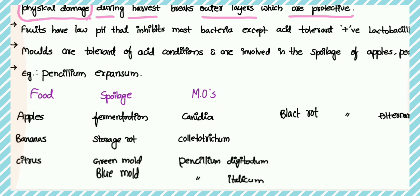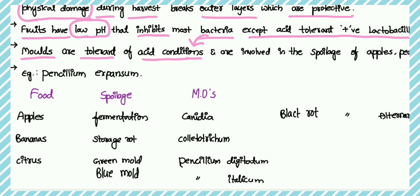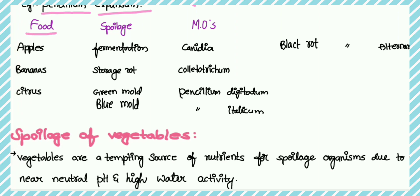Fruits have low pH — that means they are acidic in nature — which inhibits most bacteria except acid-tolerant bacteria like Lactobacillus. Molds are tolerant of acid conditions and are involved in spoilage of apples and pears. An example is Penicillium expansum.